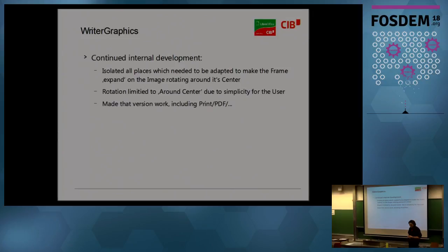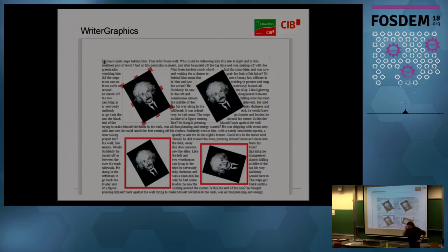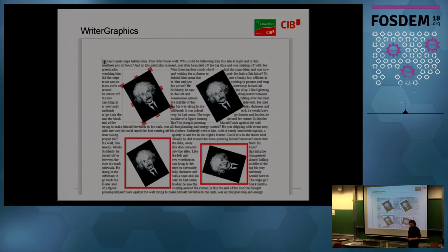I limited the rotation to around center, which makes it simpler for the user. I discussed this with UI guys and our big competitors do this too - it's just easier for people. Made this version work including print and PDF in good quality. A live example we can do in a moment. I have a screenshot for you - this is in 6.0. You see writer fly frames with graphics: top left with no text flow defined, top right with the mask added using the existing mask editor, and bottom showing rotation with frame expansion.